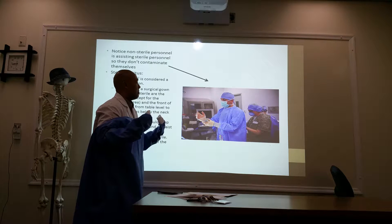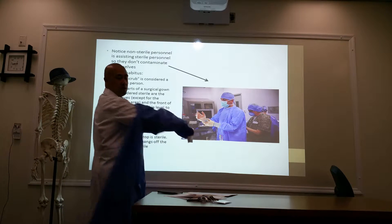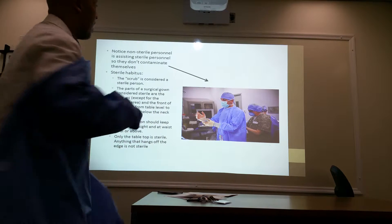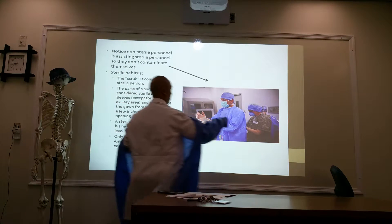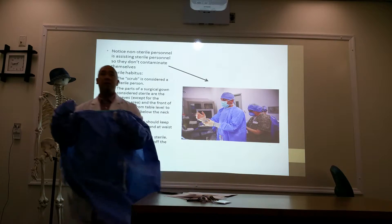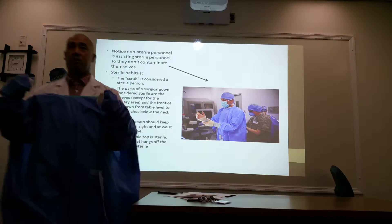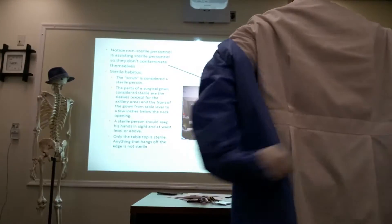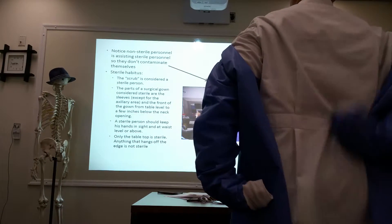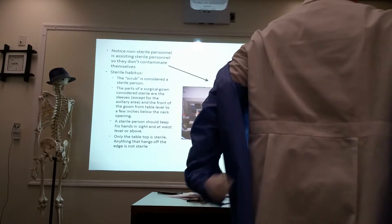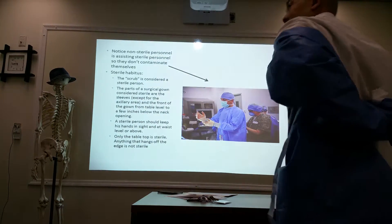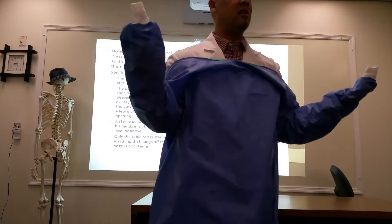A circulator assists the surgeon in putting on their sterile attire. Keep this in mind: the non-sterile circulator is touching the back of the sterile gown as they tie it up. With that said, the backside of the doctor is not considered sterile — it has been contaminated by the non-sterile circulator touching it.